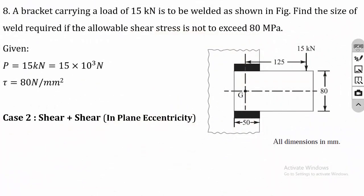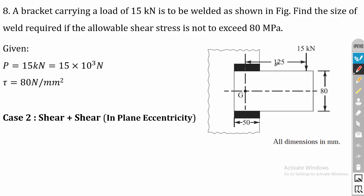In this lecture we are going to discuss a problem on in-plane eccentricity, which is shear plus shear. The primary stress is considered to act directly on the weld and will produce direct shear stress. In the case of secondary stress, by considering the eccentricity of 125 mm, this will produce a torque on the weld region and because of the torque a torsional shear stress is produced on the weld region. So it comes under shear plus shear, that is Case 2.